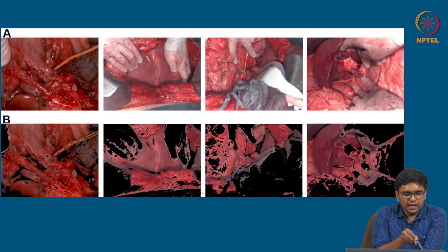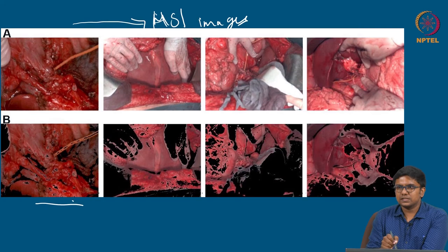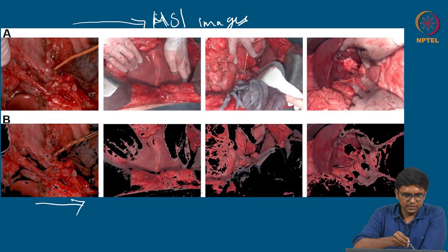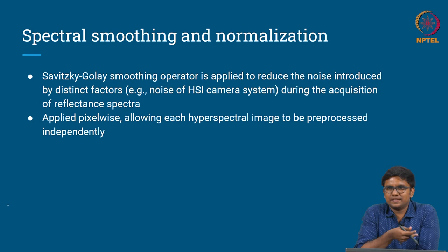Series A shows the HSI images, and series B shows how preprocessing is done to remove the background data. The surgeon's hands are visible here and are removed, and the instruments shown are also removed. The next step in data preprocessing is spectral smoothing — they use the Savitzky-Golay smoothing operator to reduce noise introduced by external factors during the acquisition of reflectance spectra.